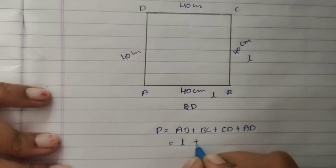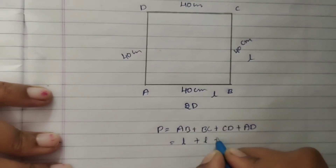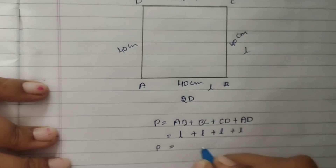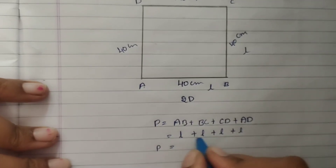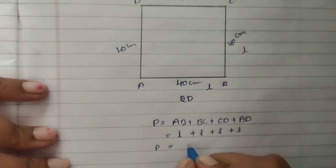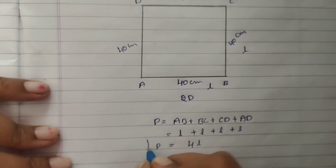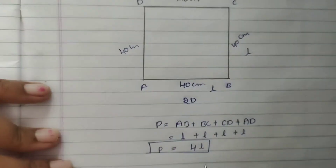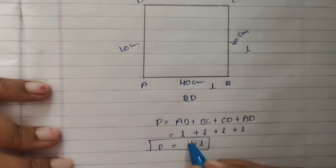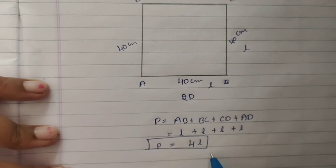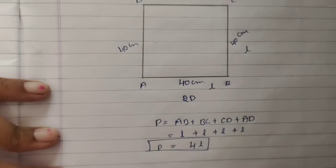So the perimeter of a square is equal to L + L + L + L, which is 4 times L. All sides are equal, so the perimeter of a square is equal to 4 into L.